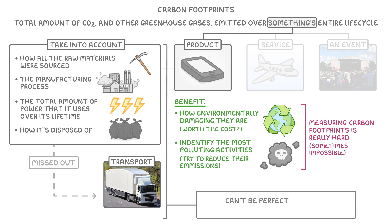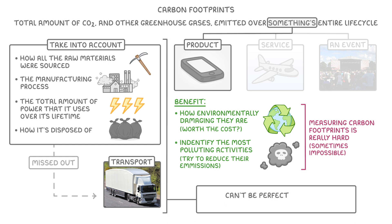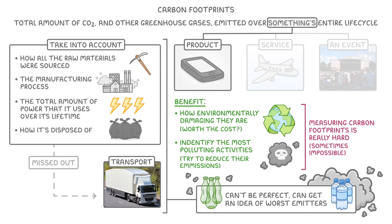Even if we have to accept that we can't get it perfect, a rough calculation can still give us a good idea of which things are the worst emitters, and allow us to compare them. And once we understand where all the emissions are coming from, we can make sensible plans to try and reduce those emissions.